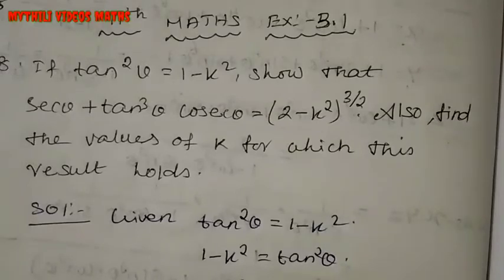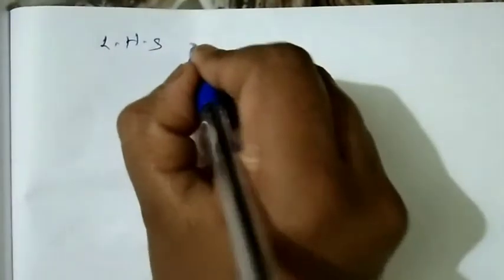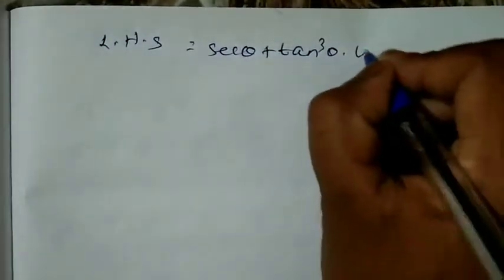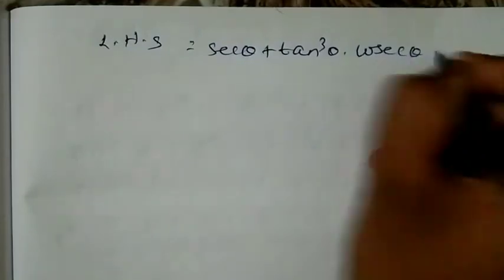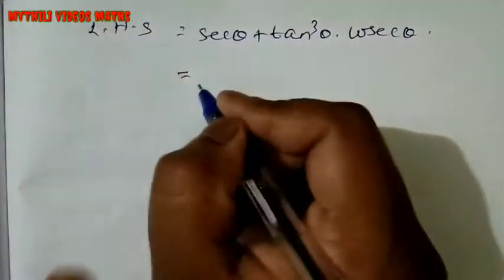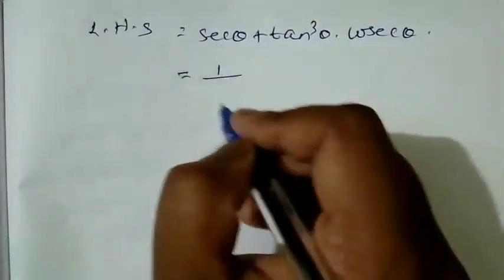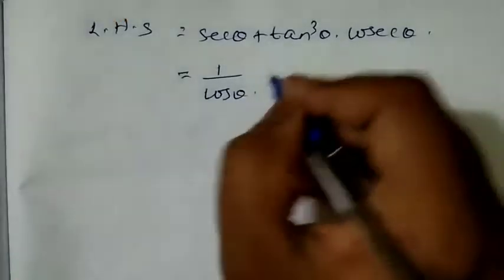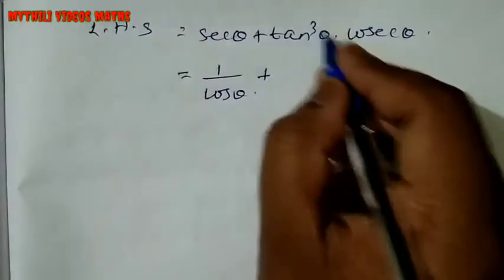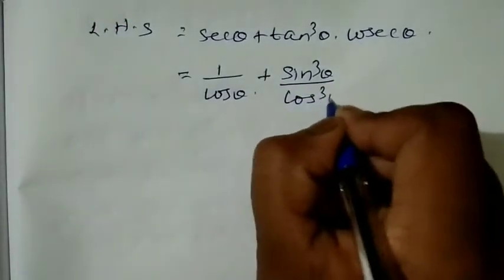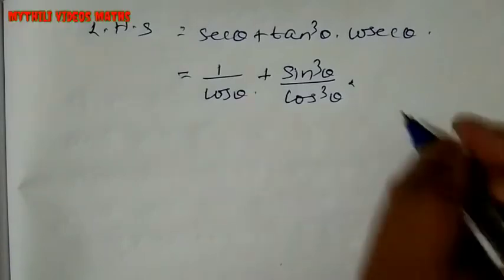Both sides are equal. Now for the LHS, we need to get secant theta plus tan cube theta into cosecant theta. For secant theta, the formula is 1 divided by cos theta, and tan theta is sine theta divided by cos theta, which equals 1.